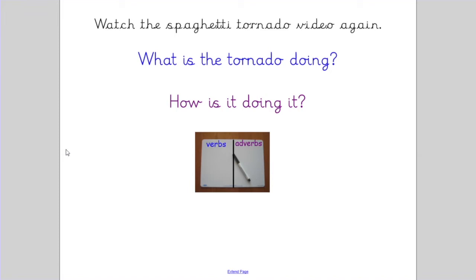When you're watching the video of the spaghetti tornado, I want you to ask yourself: what is the tornado doing? That will give you a list of verbs. For example, you might see the tornado rotating, so you're going to write rotating. You might see it swirling, so you're going to write swirling. Anything that you see it do, I want you to write it on that list of verbs.